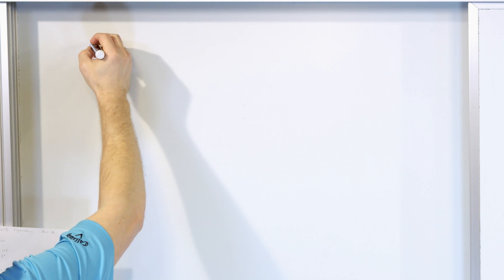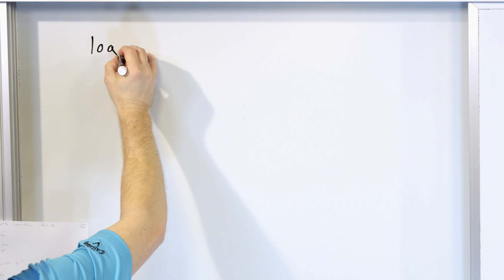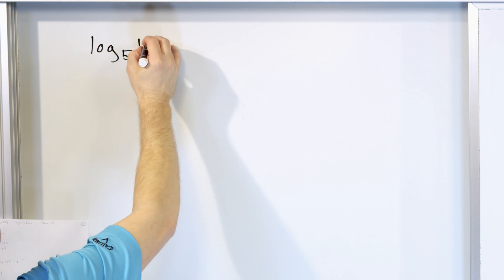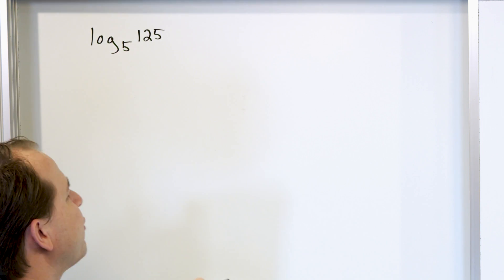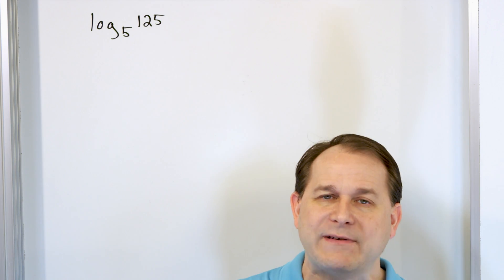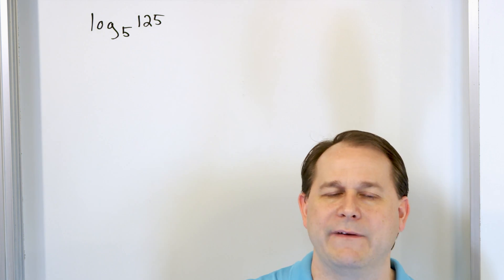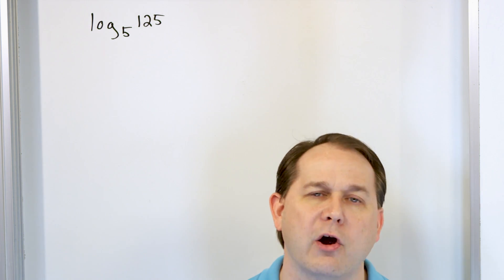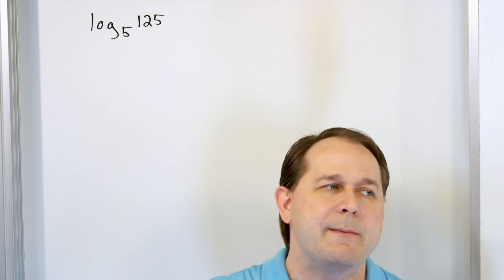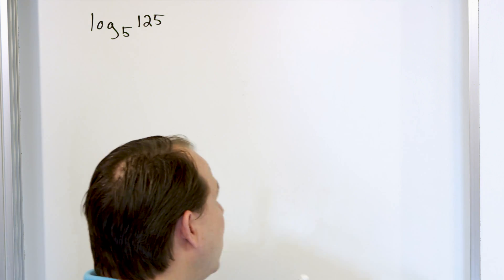Here we go simplifying some logs. Here's our first problem: logarithm base 5 of 125. All of these logarithm problems are going to have a base involved. Just like all exponentials — 2 to the power of x, 10 to the power of x, 5 to the power of x — those numbers are the bases of the exponential. Because a logarithm is the inverse of an exponential, logarithms have a base as well.